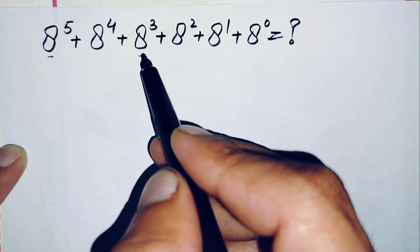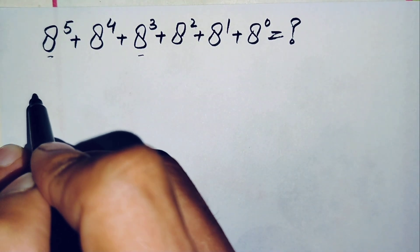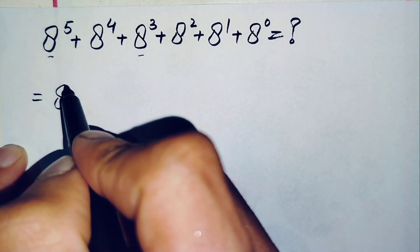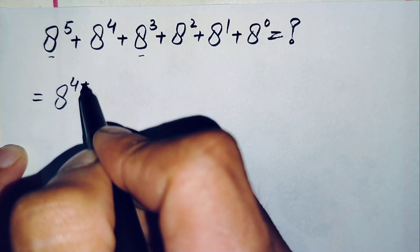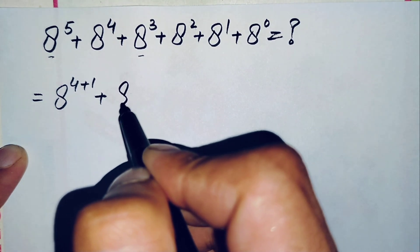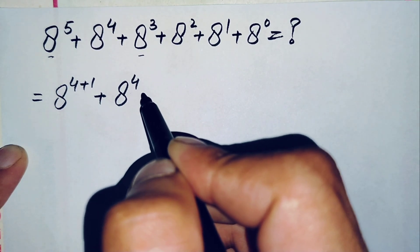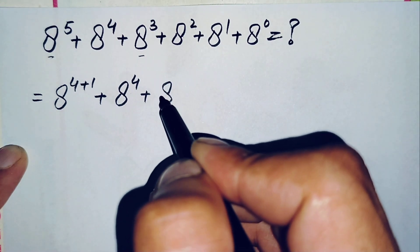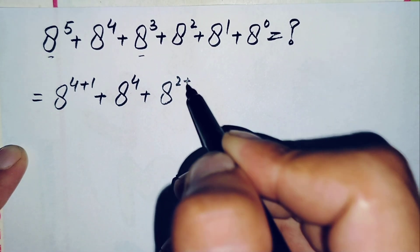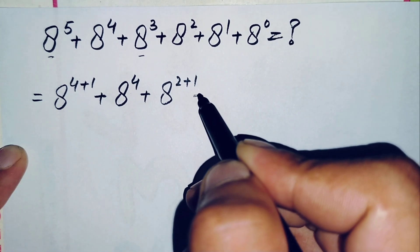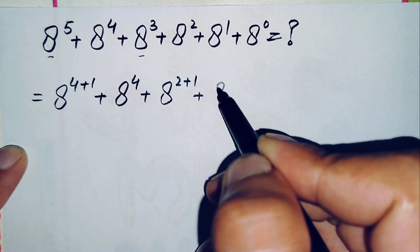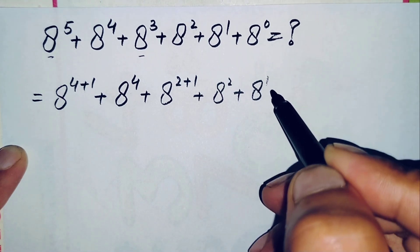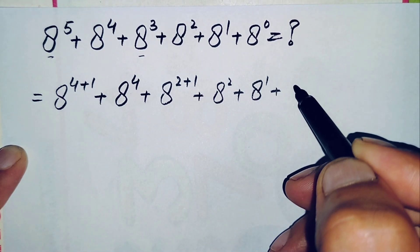We have x to the power 5 and x to the power 3. We can rewrite x to the power 5 as x to the power (4+1), and x to the power 3 as x to the power (2+1) plus x to the power 2 plus x to the power 1 plus x to the power 0, which is 1.